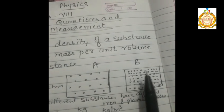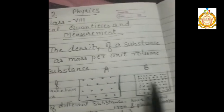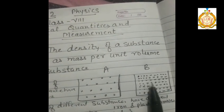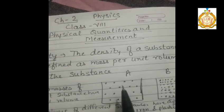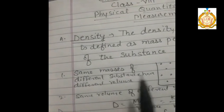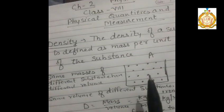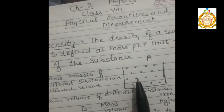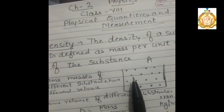In container A, molecules are very far from each other, whereas in B the molecules are very closely packed. What we can say about the density? The density of B is more than the density of A. If we take one kg of iron and one kg of cotton, both have the same mass. The same mass of different substances can have different volumes — one kg of iron occupies a small space whereas one kg of cotton occupies more space.